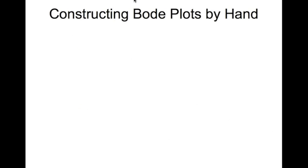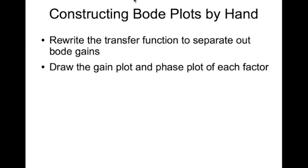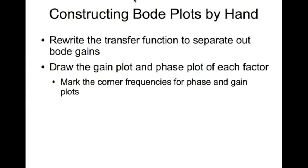The general rules for constructing Bode plots by hand are: first, rewrite the transfer function to separate out the Bode gains. Second, draw the gain plot and phase plot for each factor. Third, mark the corner frequencies for both phase and gain plots. Fourth, add all the resulting plots at all corner frequencies and draw the final resulting plot.